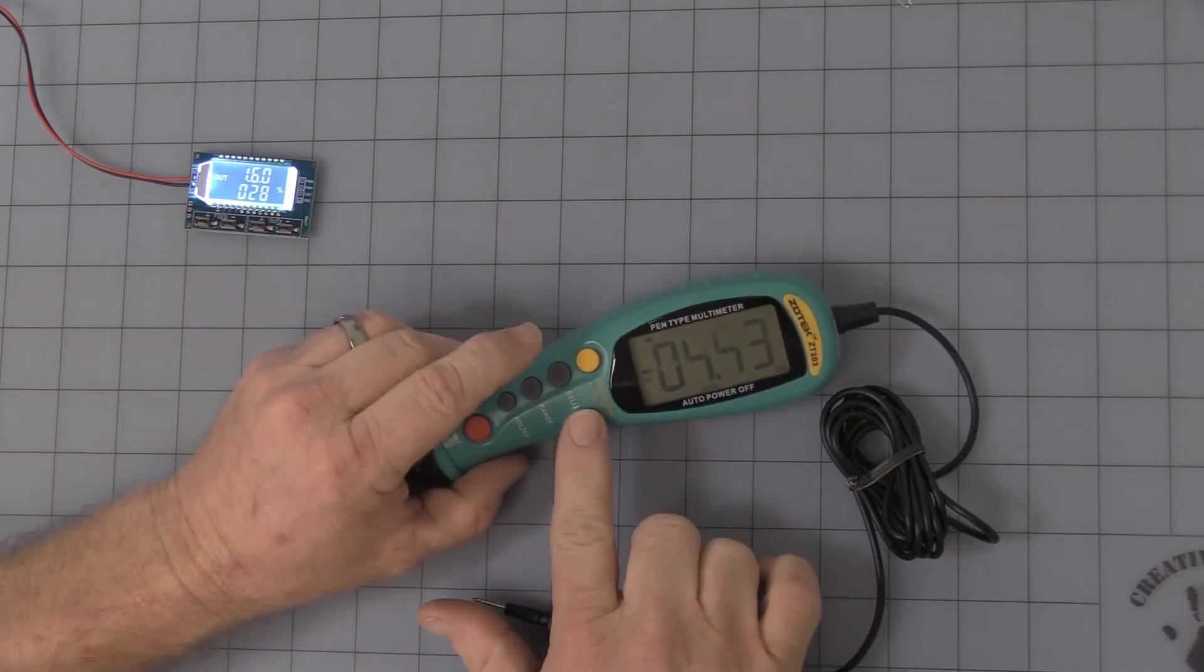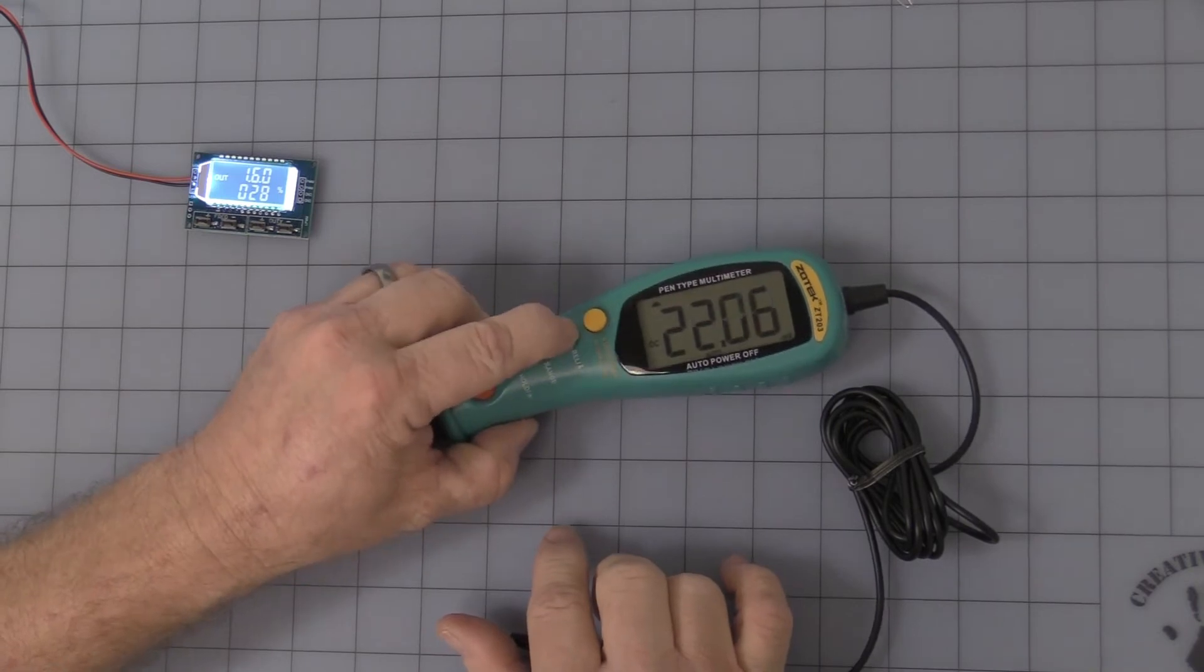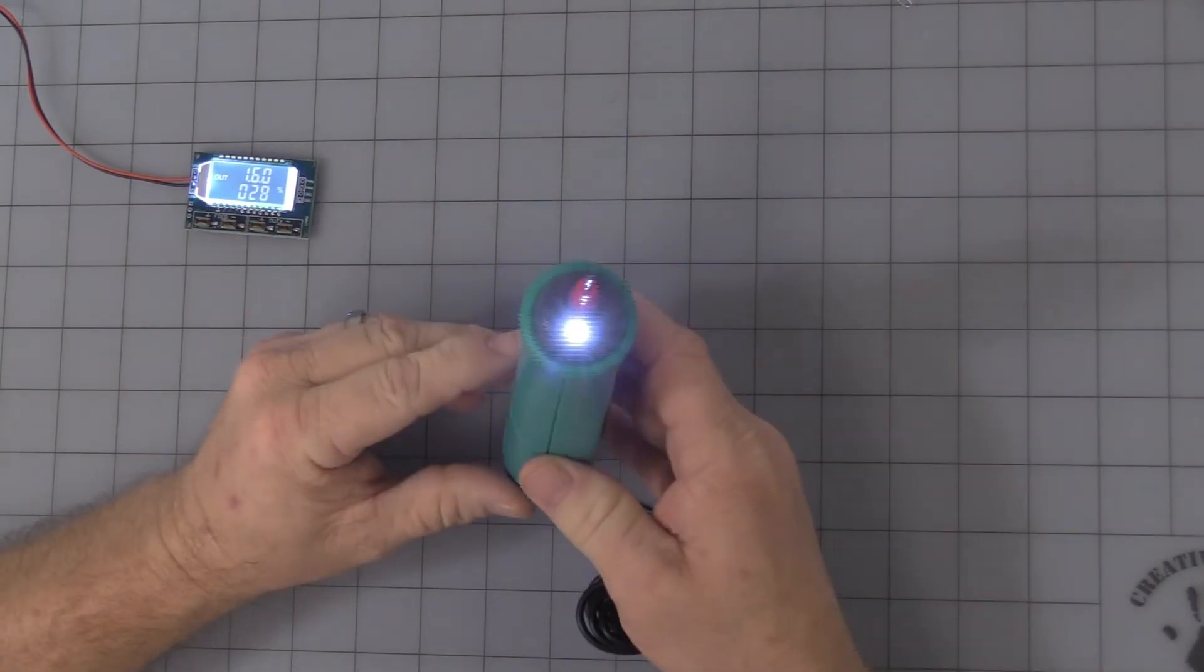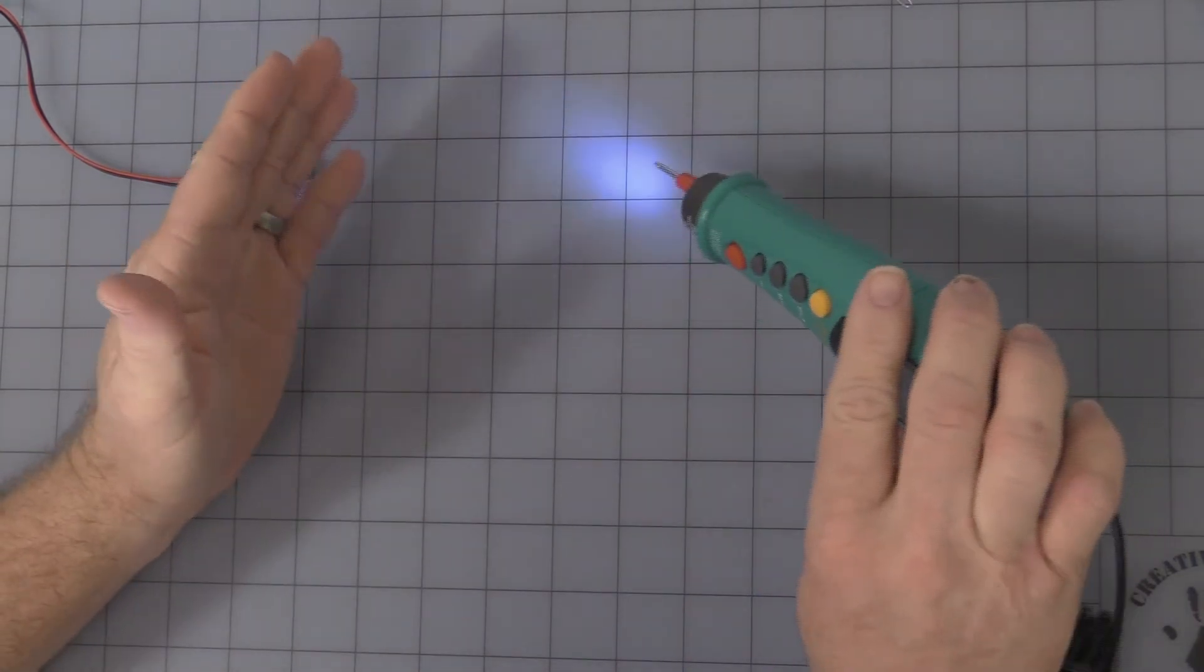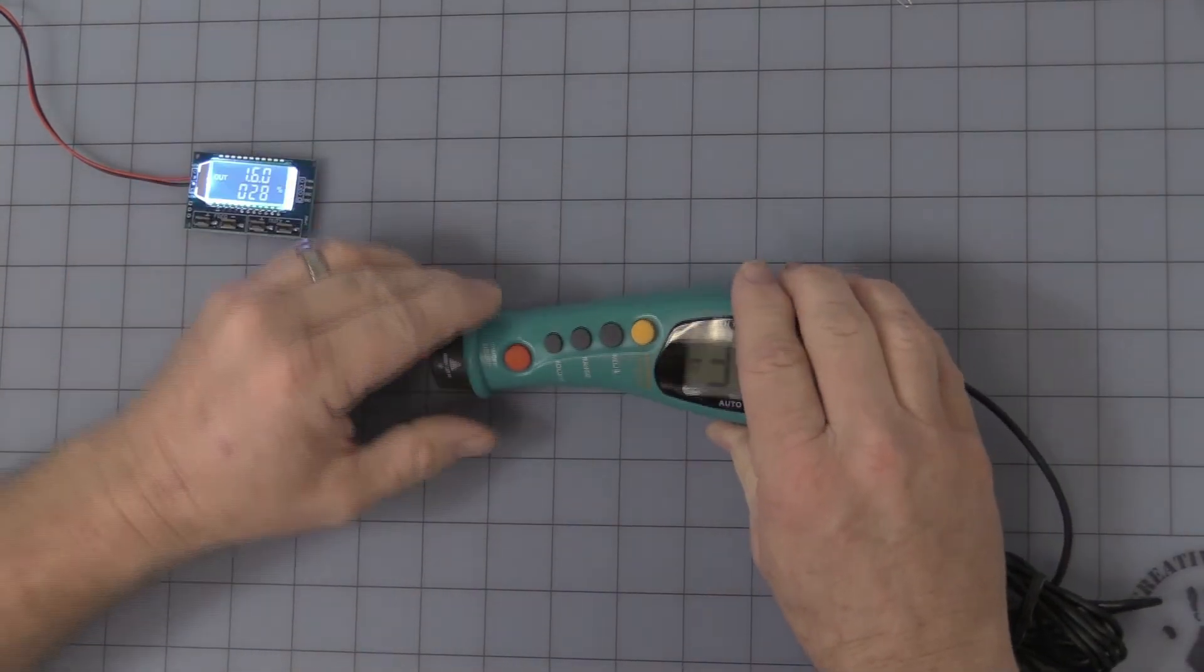What's nice is you have this other button here. Relative and light. You press and hold and it turns on a nice little flashlight. So you can see where you're working. Press and hold again, turns it off.